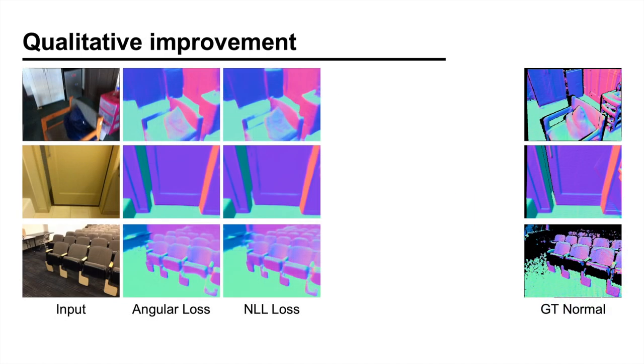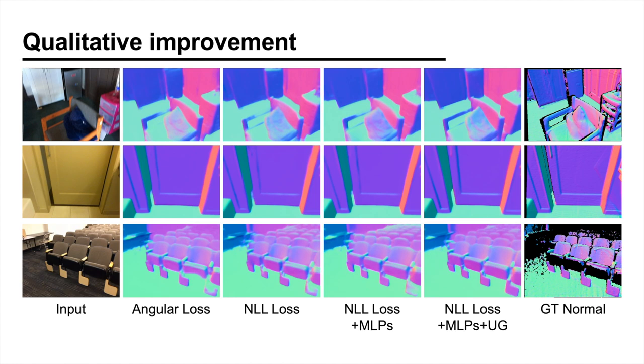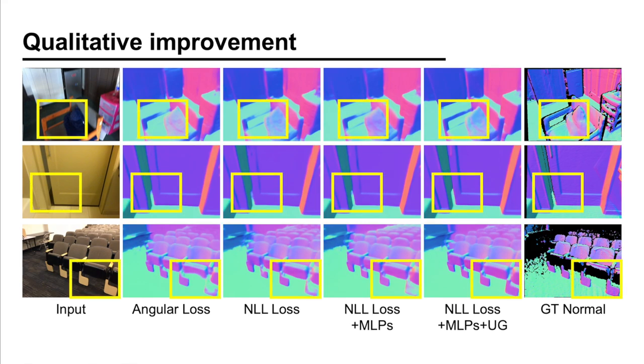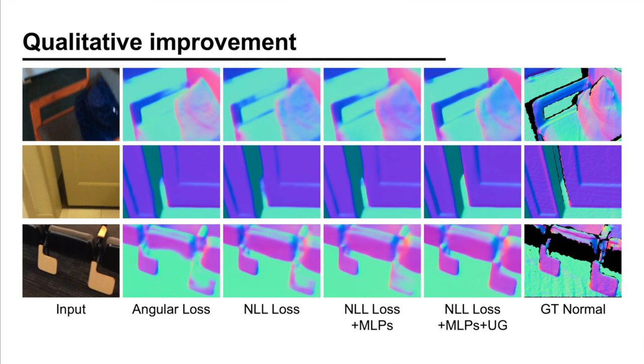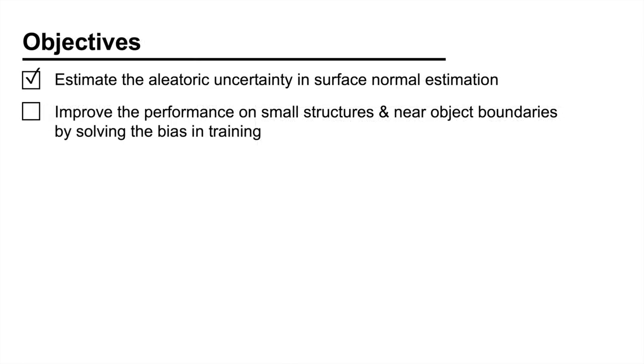Here are the predictions obtained by adding the pixel-wise MLPs and using the uncertainty-guided sampling. If we zoom in, we can see that the quality of prediction has improved especially on small structures. Quantitatively, both components lead to improvement in all metrics. So, we can tick the second box as well.